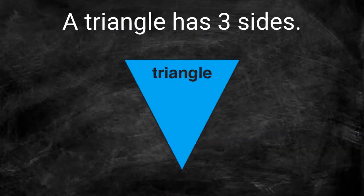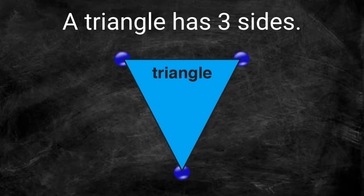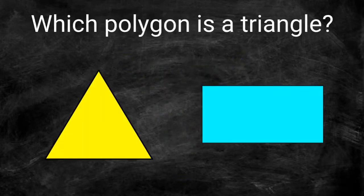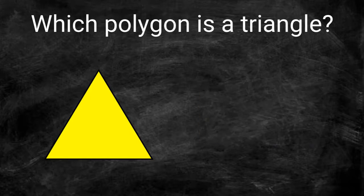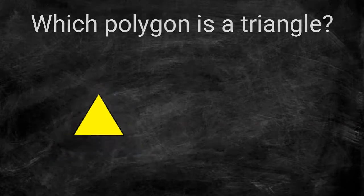Any polygon with three sides is a triangle. A triangle also has to have three vertices. Which of these polygons is a triangle? This polygon has three sides and three vertices. This is a triangle.